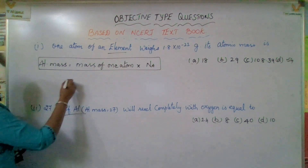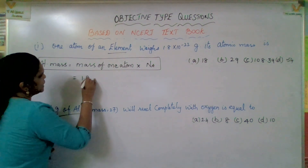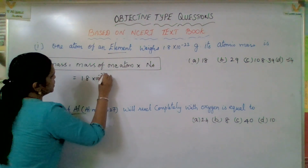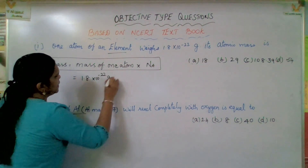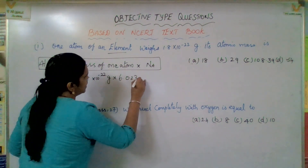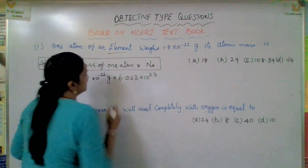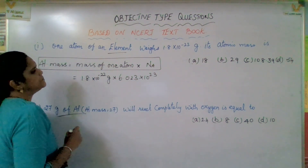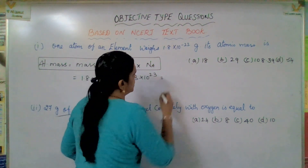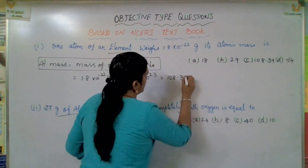So that means here, mass of one atom of the element is 1.8 into 10 to the power of minus 22 gram, multiplied by Avogadro's number 6.023 into 10 to the power of 23. Now what is the answer? You will get 108.39.